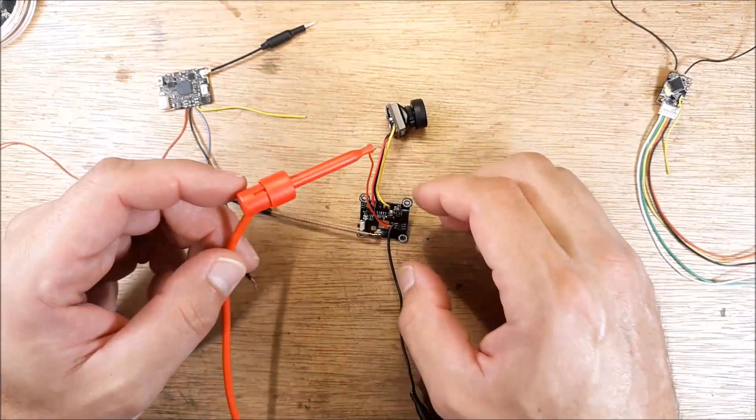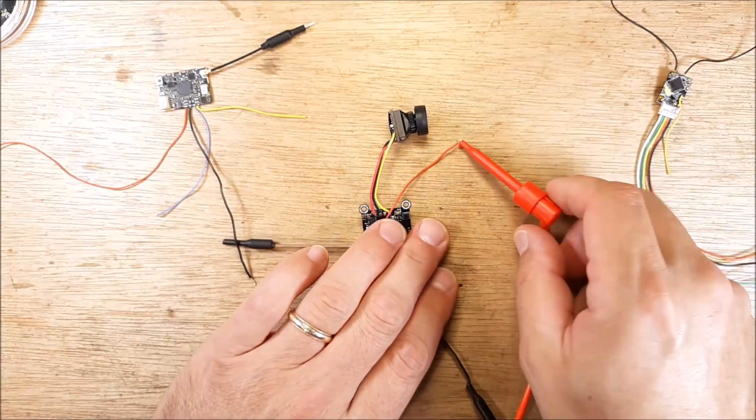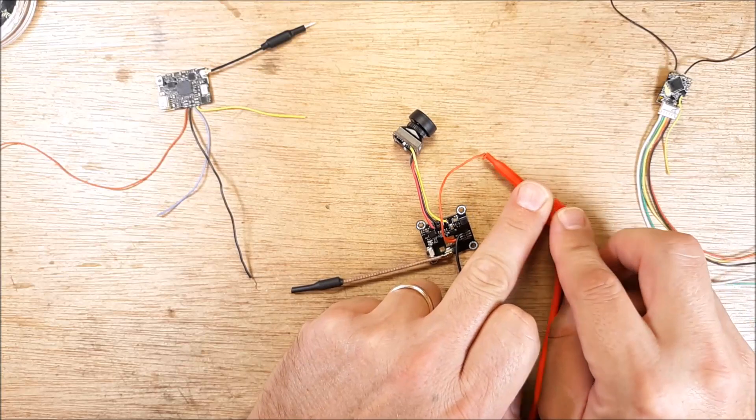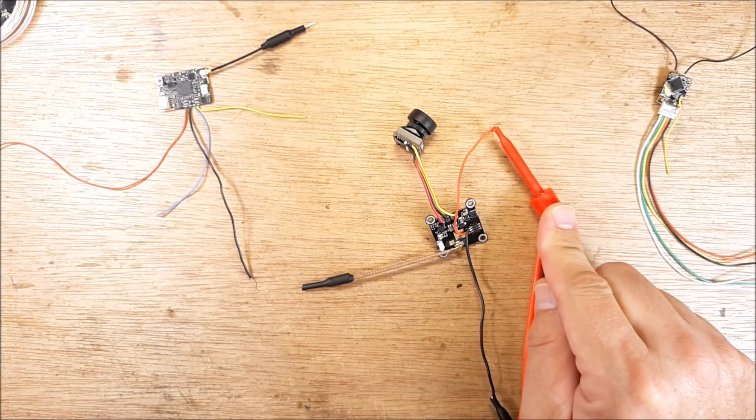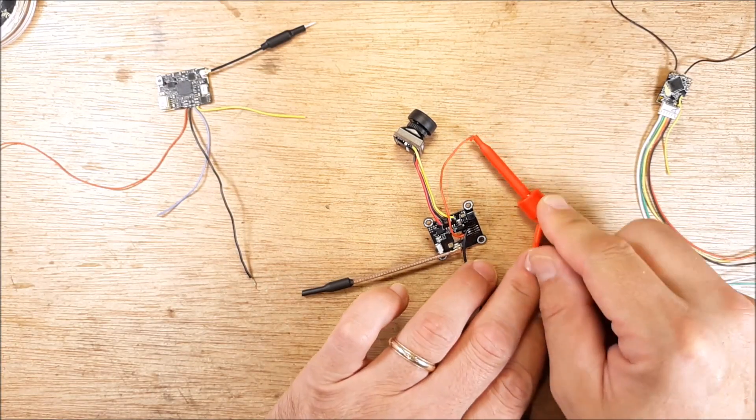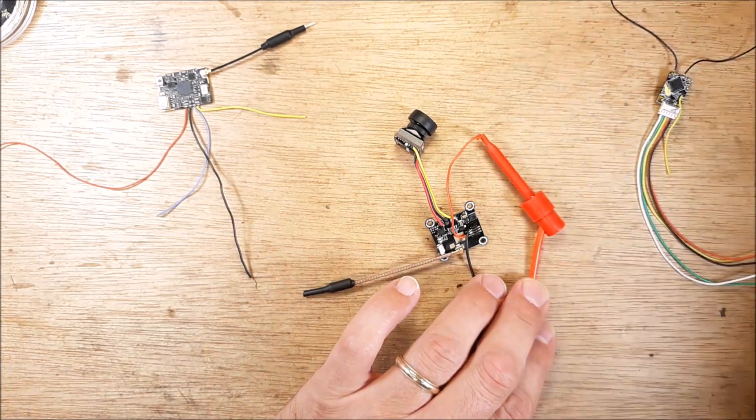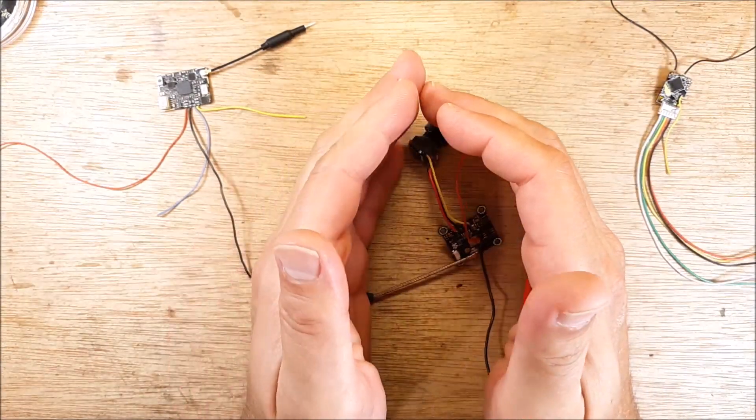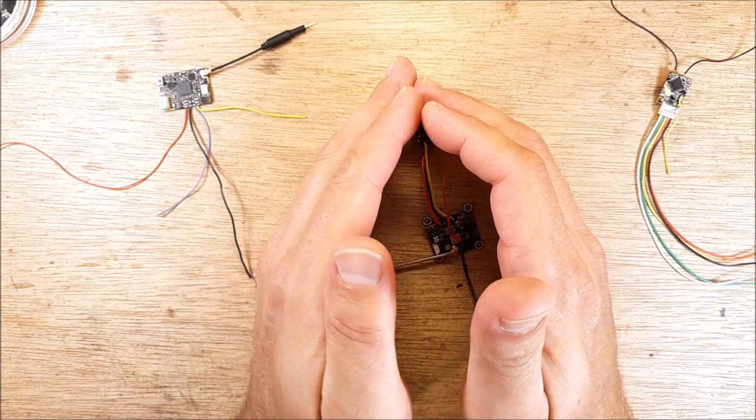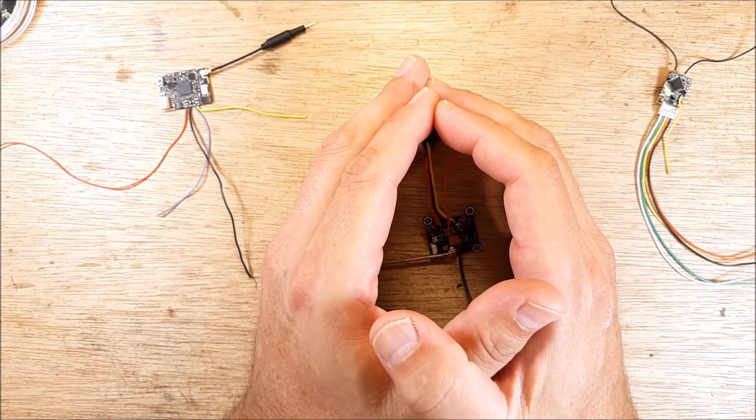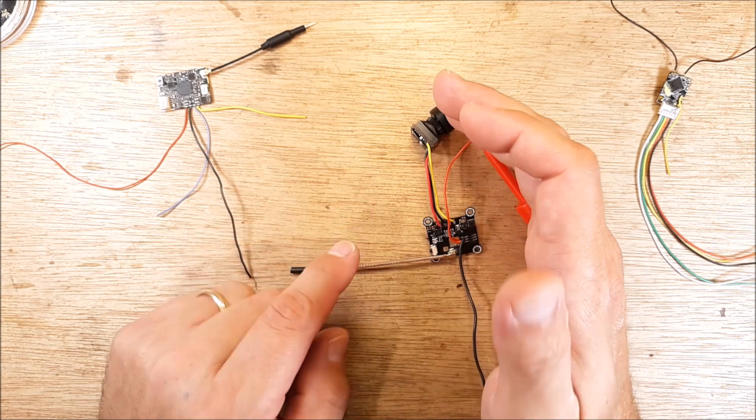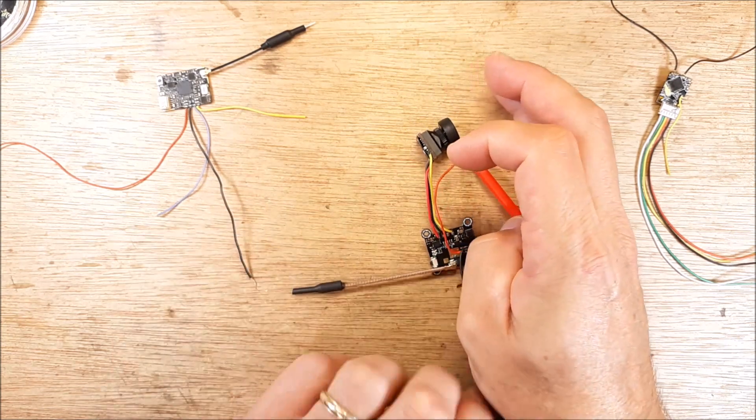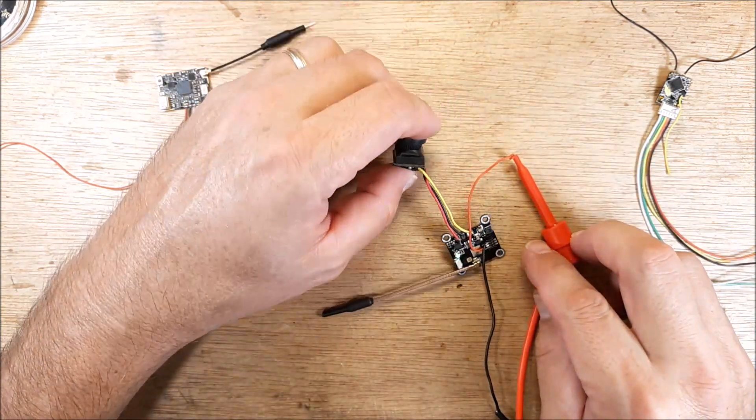And then normally when I'm busy working on something, I'll tape this down just so this doesn't touch anything. But in this case I'm just going to hold it off to the side, and then we're going to turn it on. And now that's going to supply 5 volts. You see in there, the lights flashing on the VTX? So right now that camera is working.